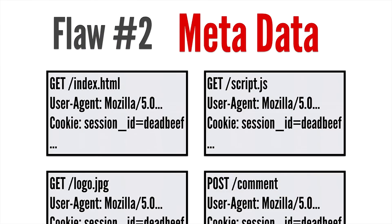This brings us to the second flaw: metadata. If we refer to the previous example of mailing letters, think of the metadata as the information you add on a letter — not the contents of the letter, but the envelope itself. Because on each letter you submit to the post office, you have to put the same information over and over again, like what type the letter is and where it's going. You always have to repeat that. This ends up being a lot of information that gets transferred back and forth over thousands and thousands of requests, so this is a big issue.